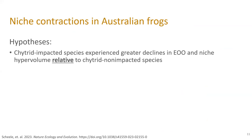We had two key hypotheses. First, chytrid-impacted species should show greater reductions in their extent of occurrence and niche hypervolume—the broad range of environmental conditions across which species occur—relative to our chytrid non-impacted control species. We highlighted 'relative' because climate change, habitat loss, invasive species, and other factors could also be driving shifts in frogs; we wanted to isolate the effect for chytrid-impacted species above and beyond the non-impacted species.